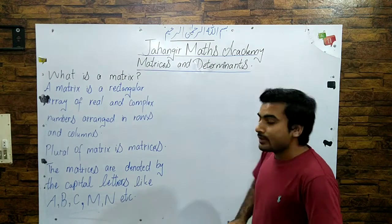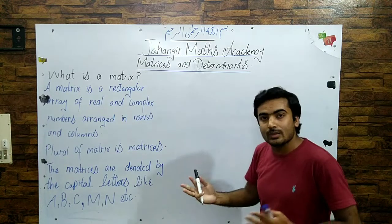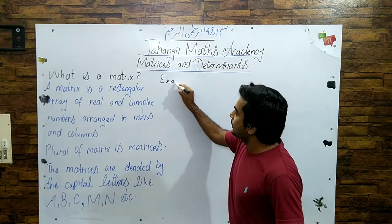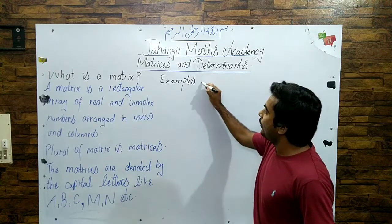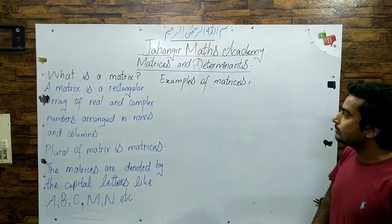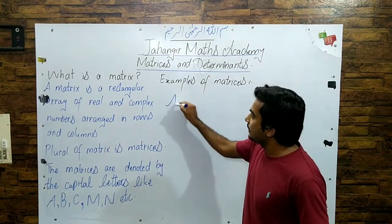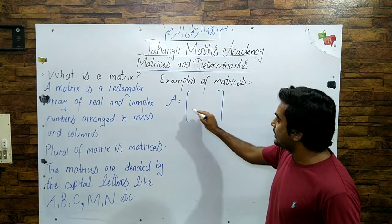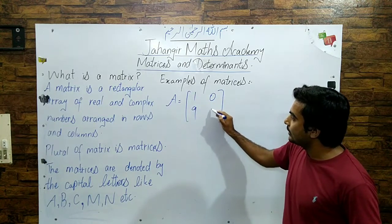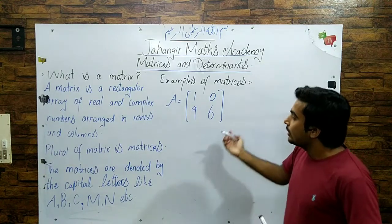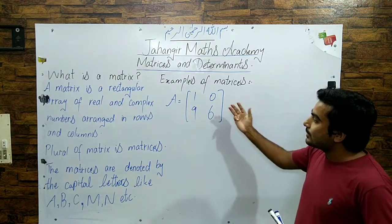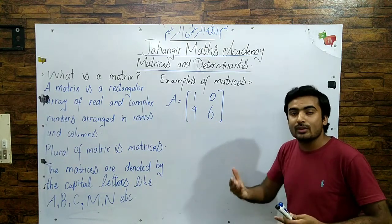I think you have got it. Now we will take some examples related to matrix. Our first example is: [1  0; 9  6] — these are enclosed in square brackets. We have included real numbers in this first example.